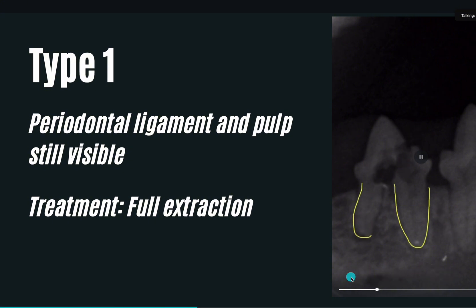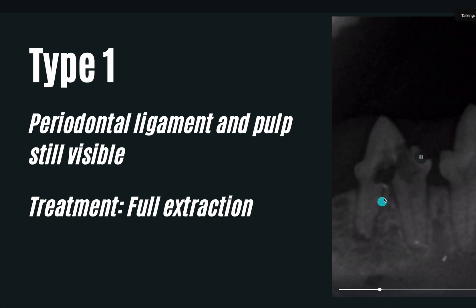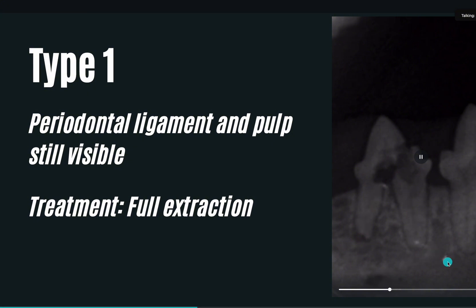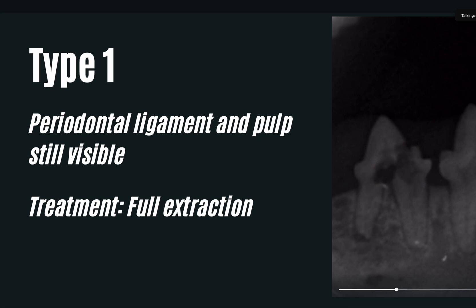With Type 1 you have to do a full extraction. You cannot leave periodontal ligament space behind and you cannot leave any pulp remnant behind. There was a saying that if you have tooth resorption, you can just do crown amputation, and people thought that's so easy - every time there's a tooth resorption we can just crown amputate it. But that's not true. It has to be the correct type of tooth resorption.